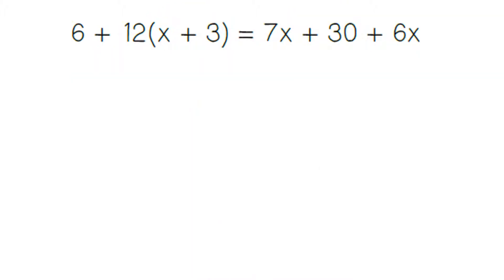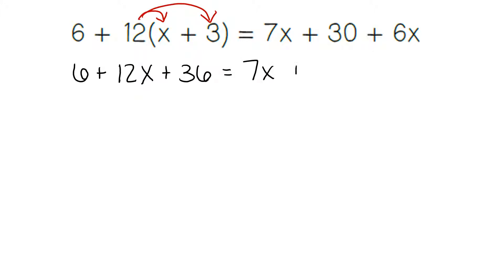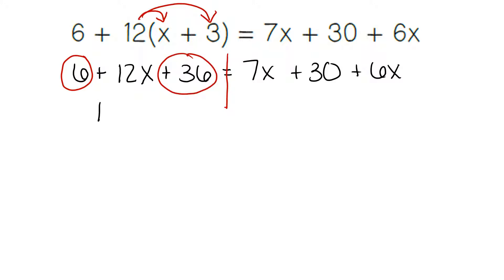For this problem, we're going to follow our 4 steps. We start by distributing — we multiply the parentheses and bring down everything else. The 6 comes down. 12 times x gives us 12x. 12 times 3 is 36. Bring down the 7x, the plus 30, and the plus 6x. Now we're combining like terms on the left-hand side: 6 plus 12x plus 36. We can combine the 6 plus 36 because they do not have a variable. 6 plus 36 gives me 42.